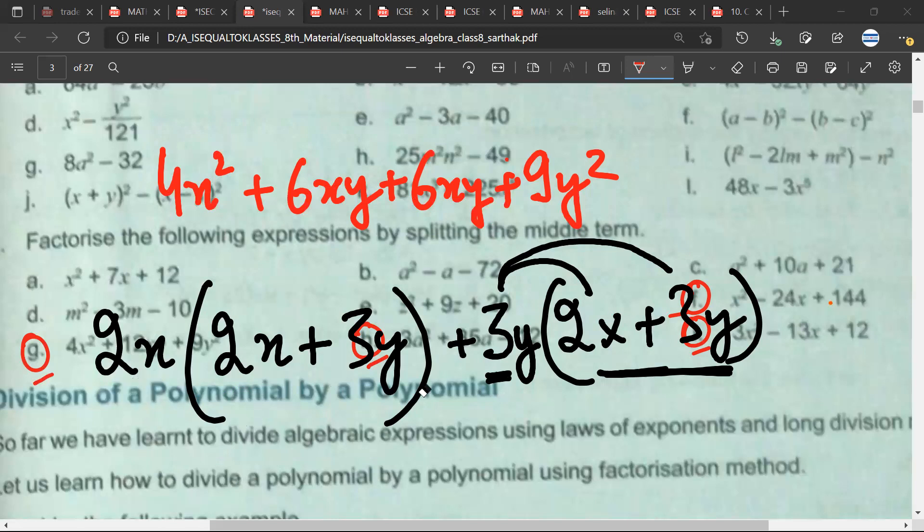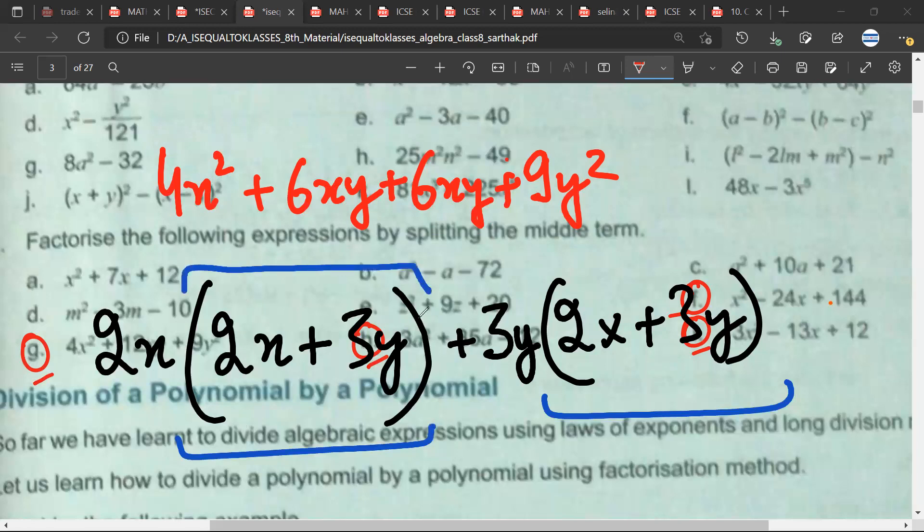What should I do next, Mr. Sartak? We have to find the common factor between the two terms. That will be 2x plus 3y.